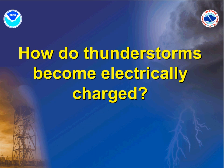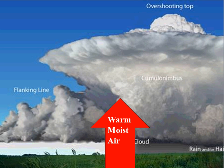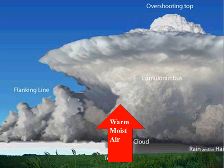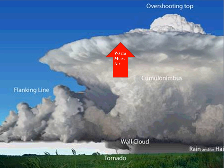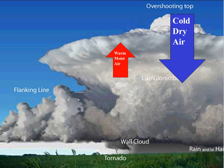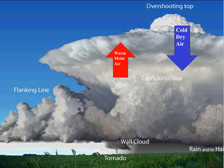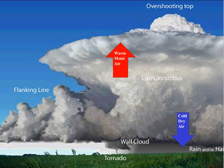Now we have a basic idea of why the atmosphere is charged. How do thunderstorms become electrically charged? A good way to visualize this process is to think of a thunderstorm as a living, breathing thing. Thunderstorms have an updraft where they ingest warm, moist air, much like a human breathing in oxygen to survive. Once the moisture in the air is used by the thunderstorm, a downdraft expels the cold, dry air, much like a person exhaling carbon dioxide.